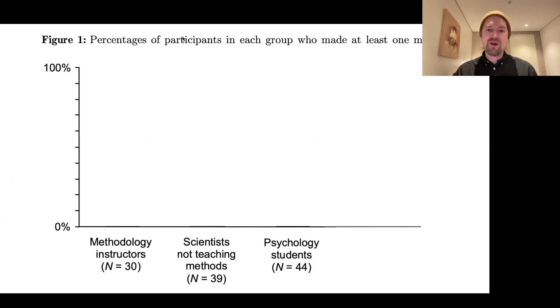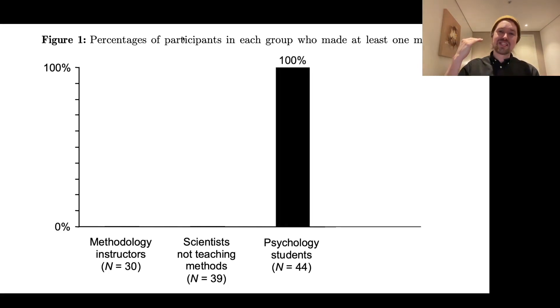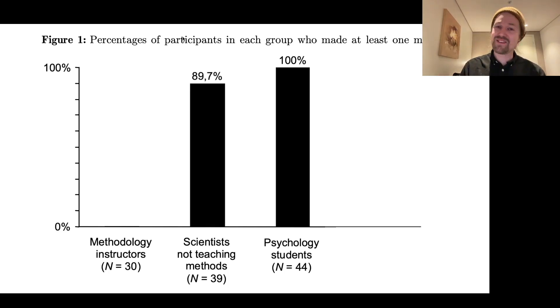So the question is now, how did the poor psychology students, scientists at this university that didn't teach methods, and professors and teachers that did teach methodology, how well did they do on this questionnaire? Well, the students unfortunately did poorly. All of the students made some mistake. They answered true on one of these statements in this questionnaire. So they didn't make it none of them. The scientists didn't do much better. 90% of them failed the questionnaire.